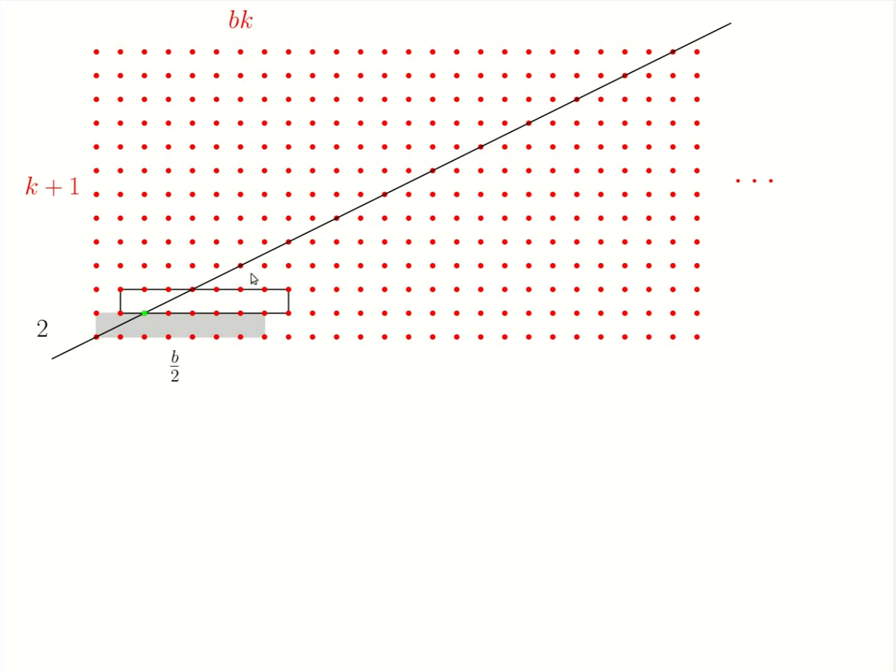First, observe that such a line will pass through at least k other points on its way out. This is easily seen by considering the side lengths of this smaller rectangle. This smaller rectangle is k times smaller than the big rectangle. And thus, this line on its way out will pass through at least k points.